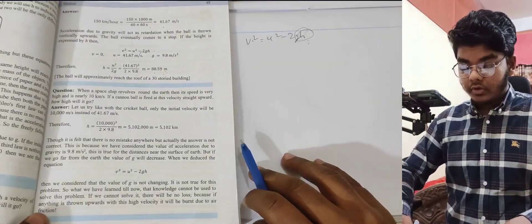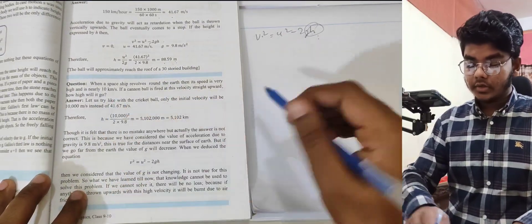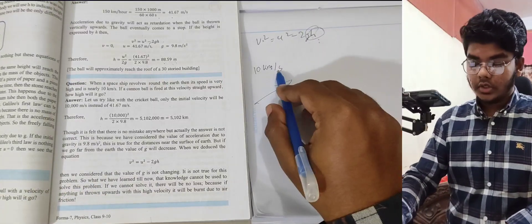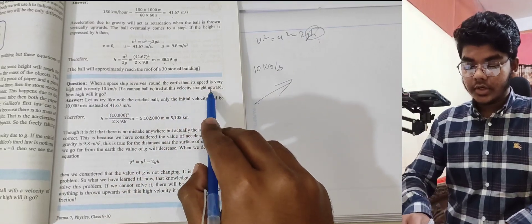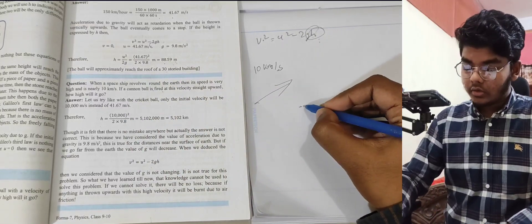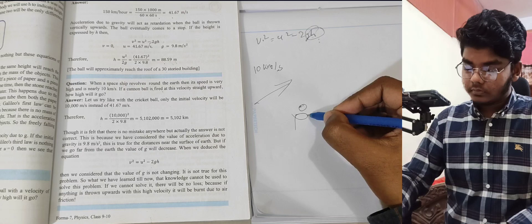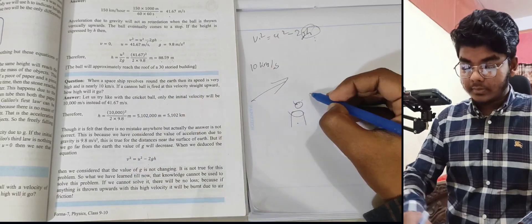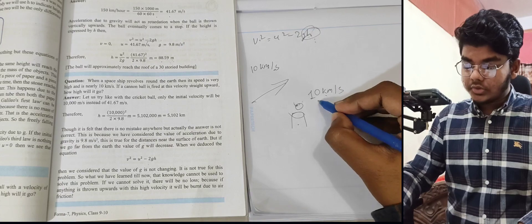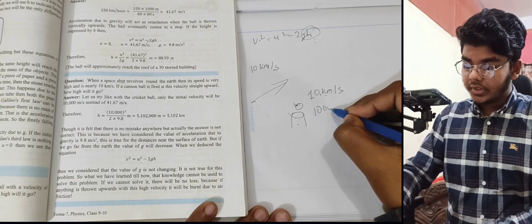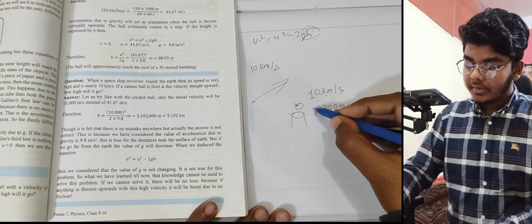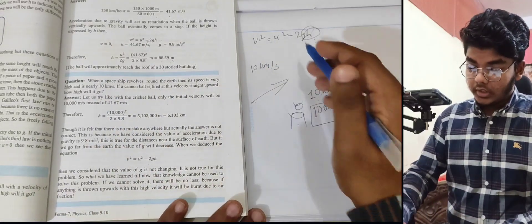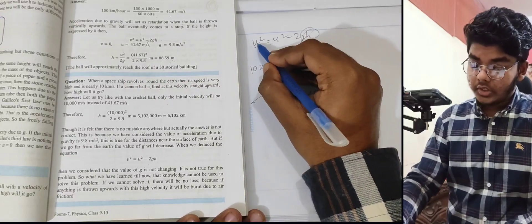Next problem: When a spaceship revolves around the earth, its speed is very high — nearly 10 km/s. If a cannonball is fired at this velocity straight upward, how high will it go? At maximum height, v = 0.